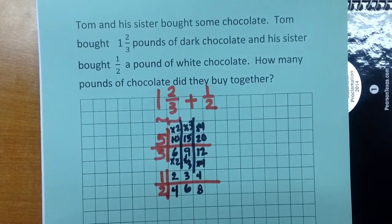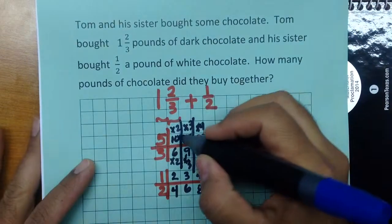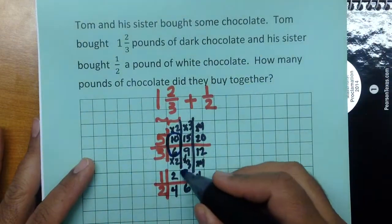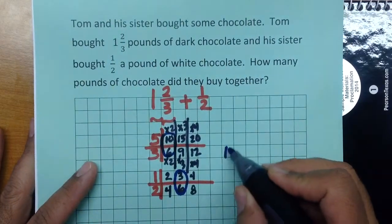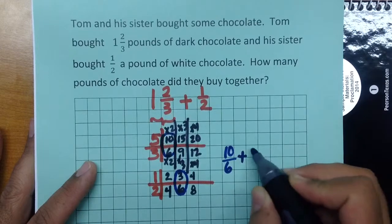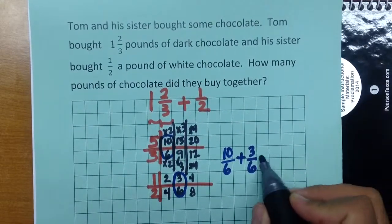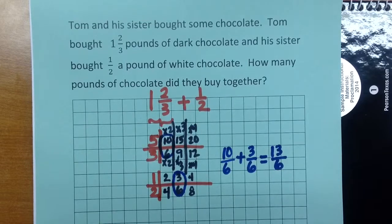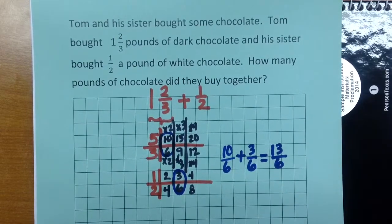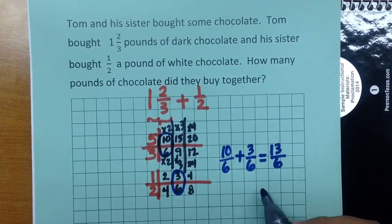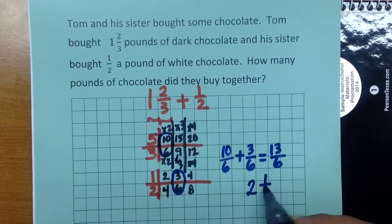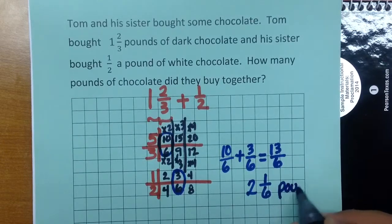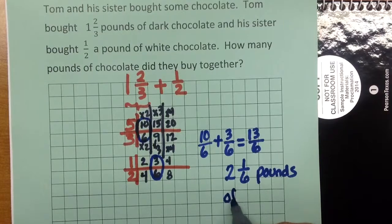Looking at both ratio tables, you can see that the least common denominator is six. So we have ten over six plus three over six, which gives us thirteen over six. Using the graph paper very neatly aligns the fractions, the numerators and denominators, and it's easy to see what your least common denominator is — in this case it was six. Thirteen over six can be changed back into a mixed number, so we have two and one-sixth pounds of chocolate.